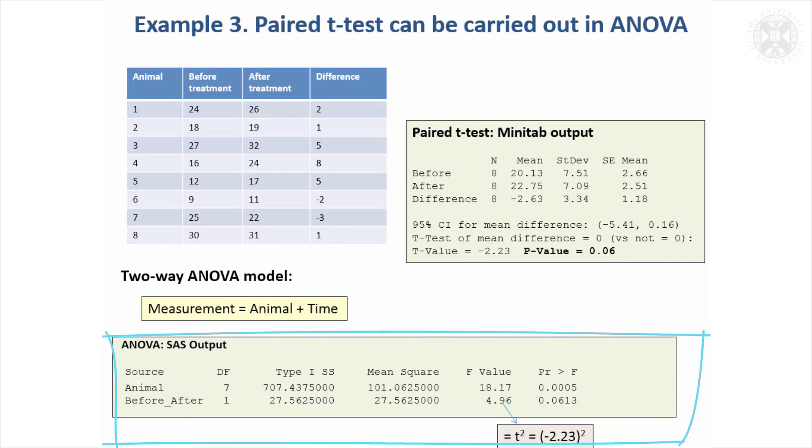So you don't need to worry really about the equivalence between F and t, but the main thing is you get exactly the same p-value from an analysis of variance with this kind of format as you would if you did a paired t-test.